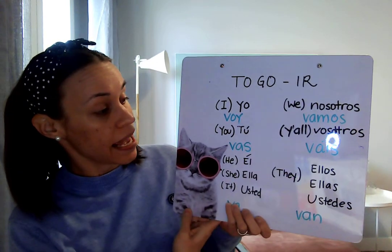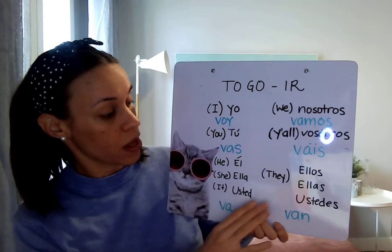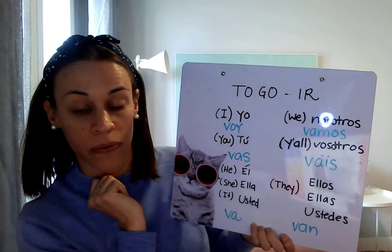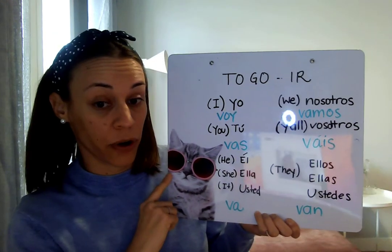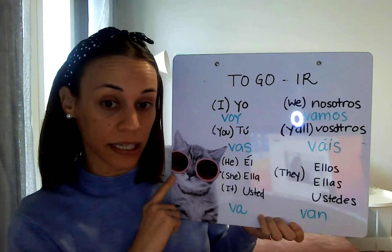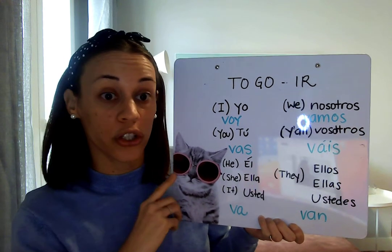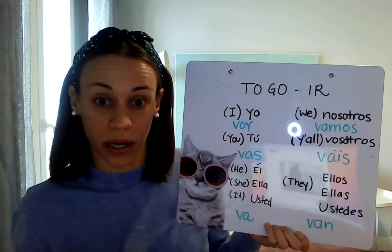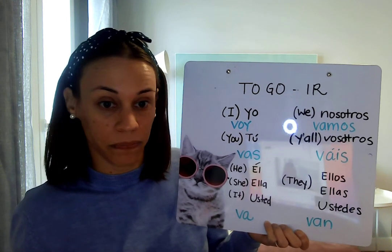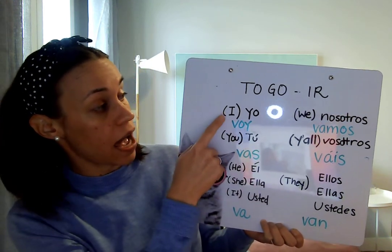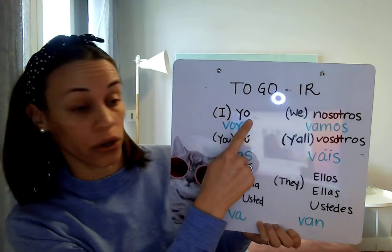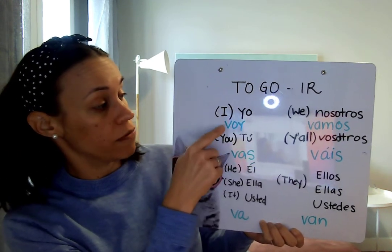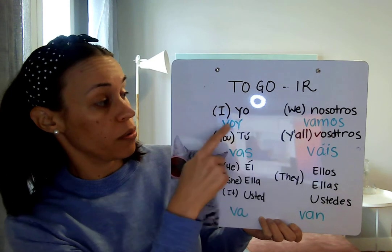So today let's have a look here. The verb ir, 'to go,' is in the infinitive form, so we need to change it to the form based on the subject pronoun that we want to speak about. So in the case of I, which is yo in Spanish, we say voy. Yo voy.